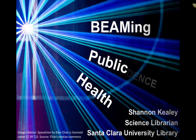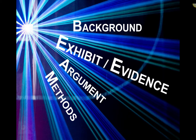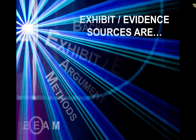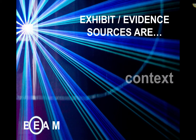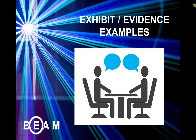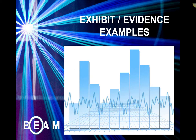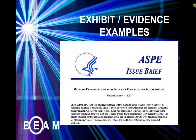In the third Beaming Public Health video, you'll learn about exhibit and evidence sources. Exhibit and evidence sources are used to help you analyze the context and implications of your topic. Examples include data collected through interviews, surveys, or field samples, raw data or statistics collected by others, and statements or arguments that you analyze.